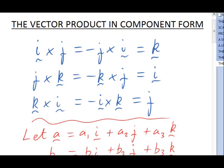There, you see, i cross j is k. k cross j is negative i. k cross i is j, and so on. We can substitute those results into our vector product below. Let's go back there and do that now.